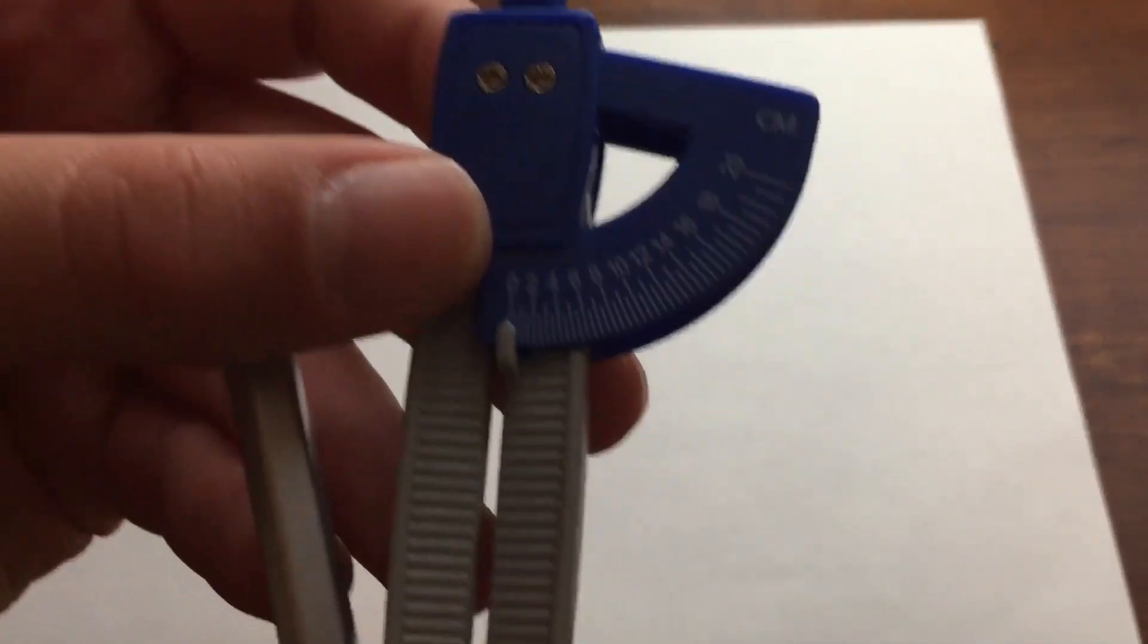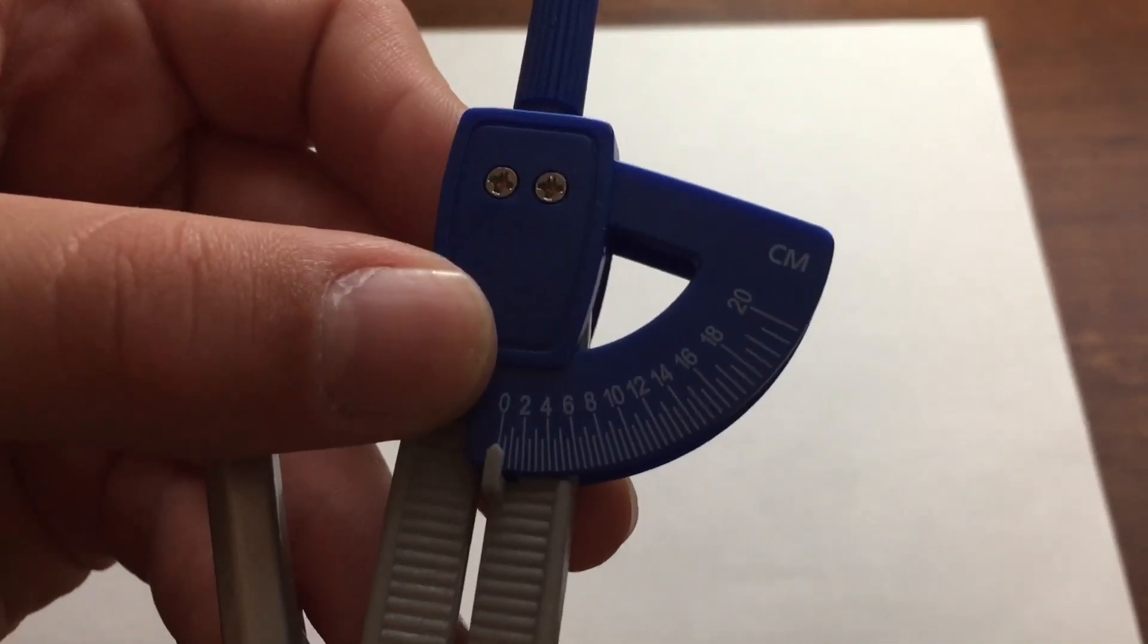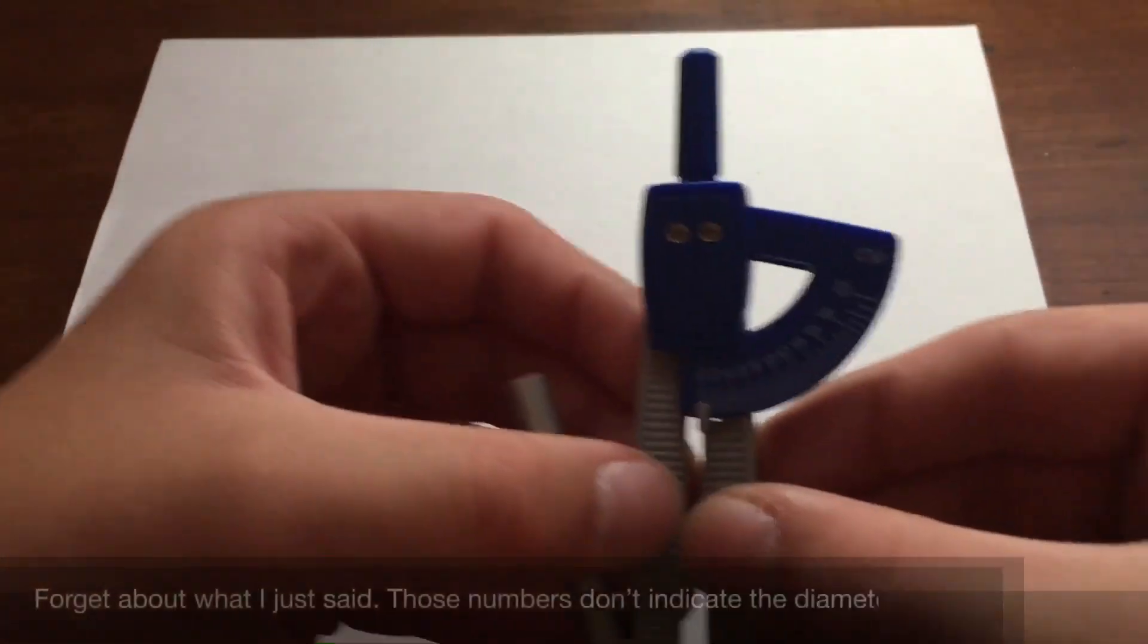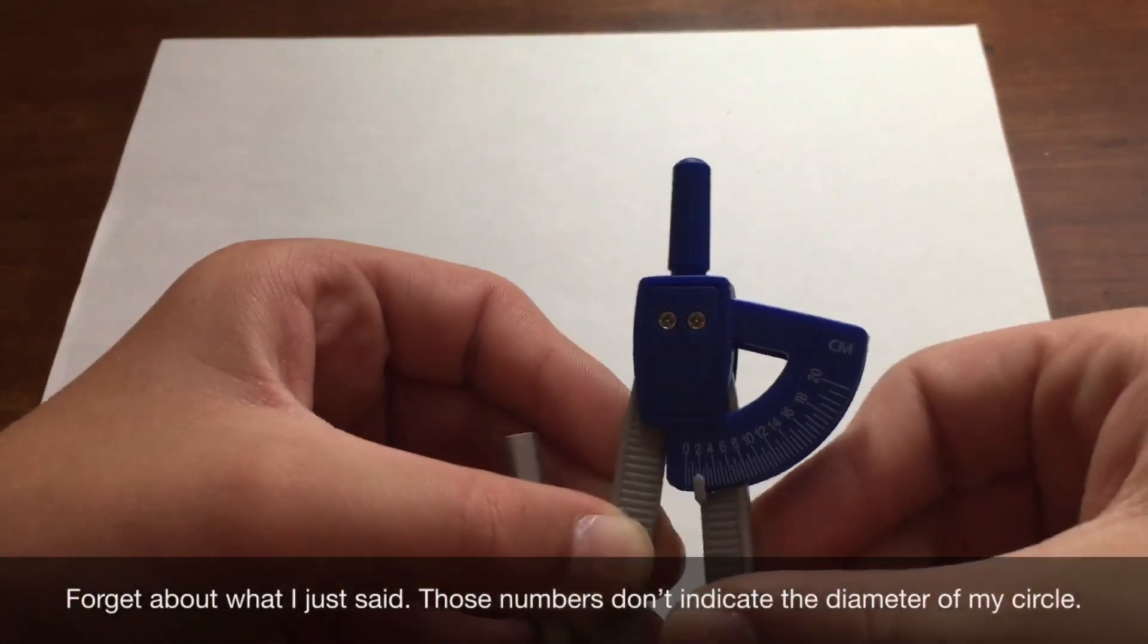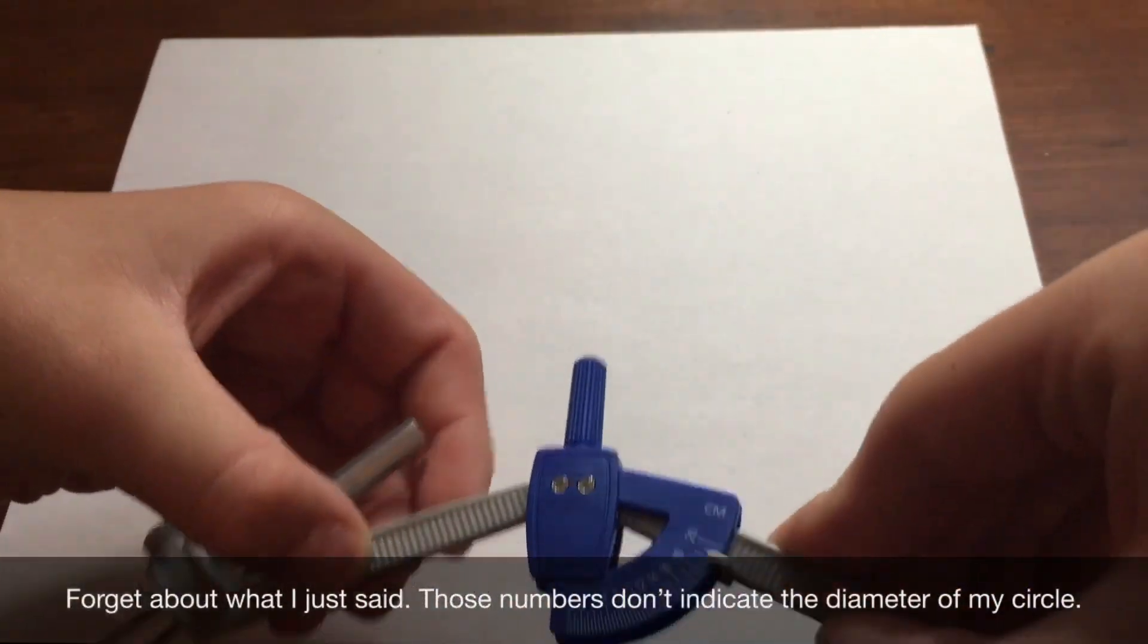Now, what I like about my compass is it actually tells me right on the compass how big it's going to be depending on how much I adjust it. So, the biggest the circle could possibly be is 20 centimeters.